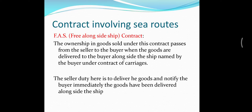Good morning students. Today we will discuss contracts involving sea routes. This is the last portion of the Sale of Goods Act. Some of the major contracts involve sea routes or rail routes which need shipment. The key questions are: when will ownership transfer to the buyer, and who should bear the expenses of delivery?